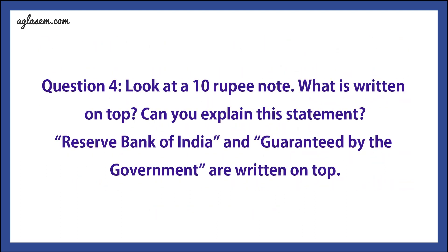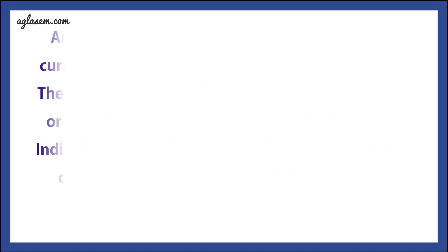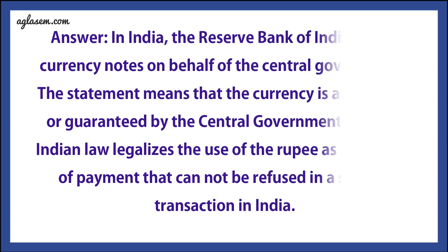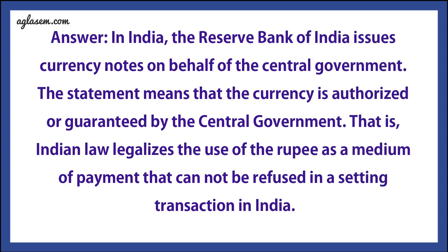Question 4: Look at the 10 rupee note — what is written on top? Can you explain the statement? Answer: 'Reserve Bank of India' and 'guaranteed by the Government' are written on top. In India, the Reserve Bank of India issues currency notes on behalf of the central government. This means the currency is authorized and guaranteed by the central government. Indian law legalizes the use of the rupee as a medium of payment that cannot be refused in settling transactions in India.